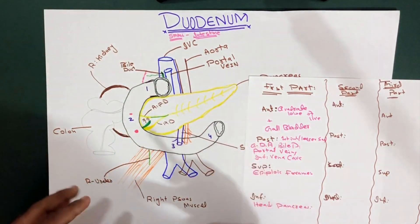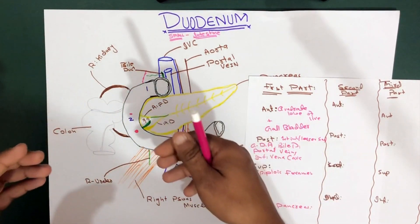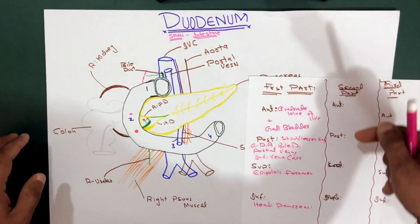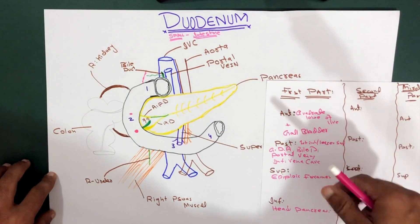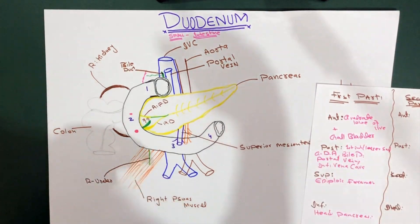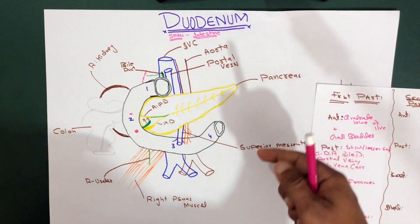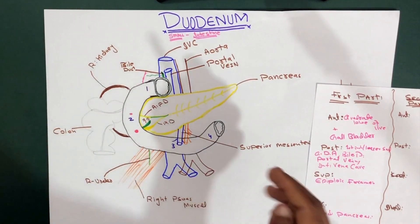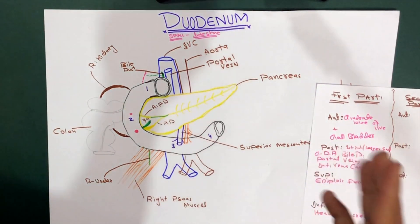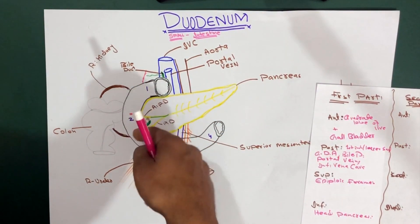Before talking about the second part of the duodenum, we need to go through a little bit of theory - what is actually present in the second part of the duodenum. Then we will talk about the relations of different structures compared to the second part of the duodenum. The second part of the duodenum runs vertically downward.